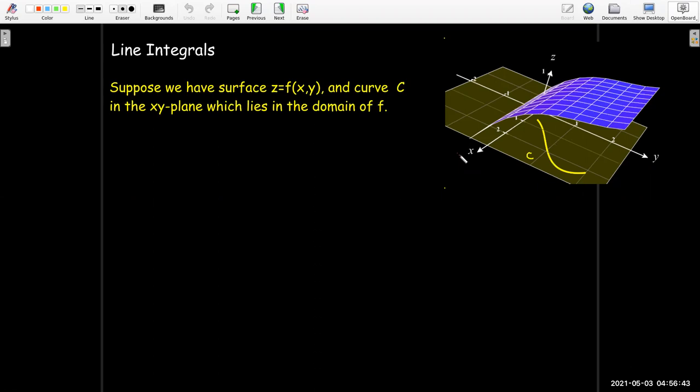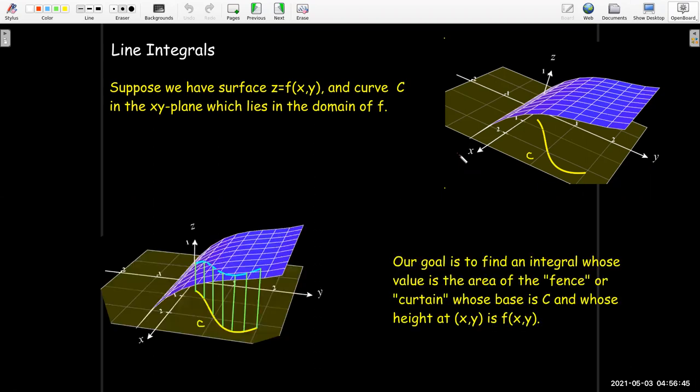What we're trying to do is find an integral whose value represents the area of this curtain or fence whose base is on the curve C, and the height at each point is the corresponding height on the surface. This blue line here is actually the image of this yellow curve C, but on the surface.